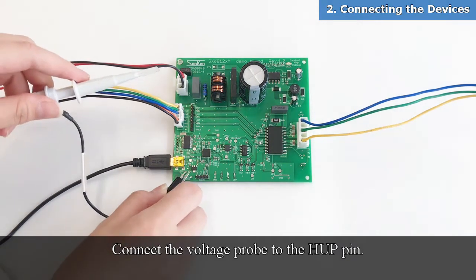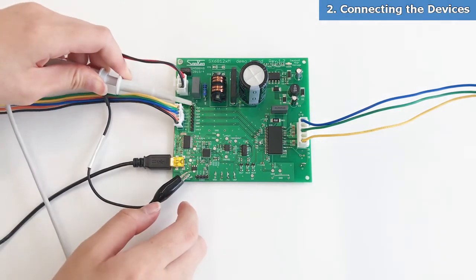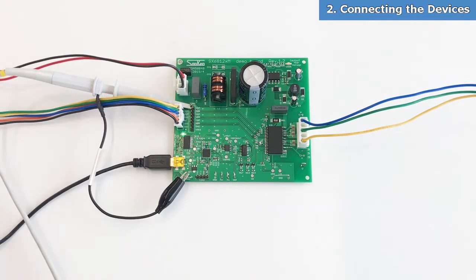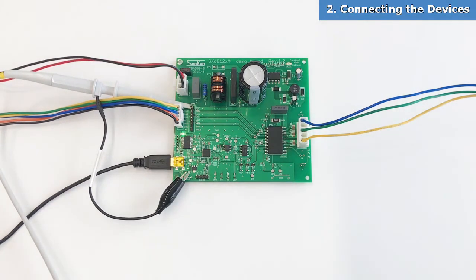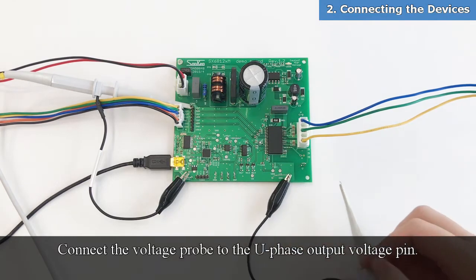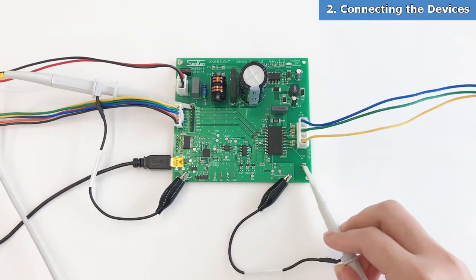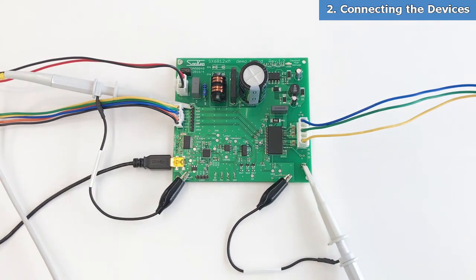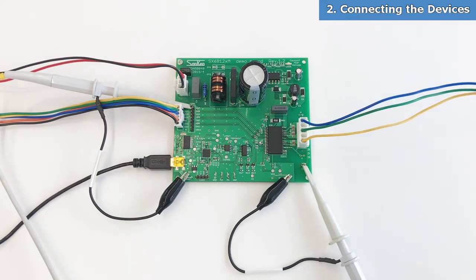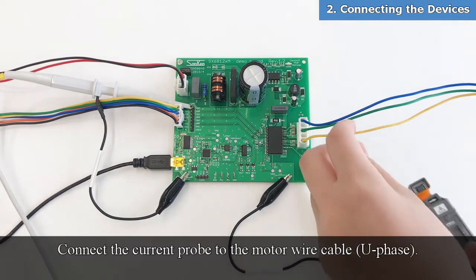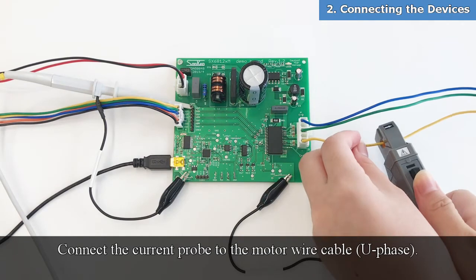Connect the voltage probe to the HUP pin. Connect the voltage probe to the U-phase output voltage pin. Connect the current probe to the motor wire cable.